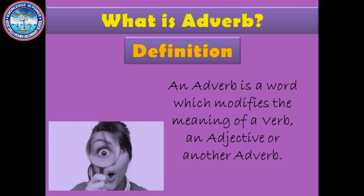Adverb is the most important part of speech in English grammar. An adverb is a word which modifies the meaning of a verb, an adjective, or another adverb. You hear these words on a daily basis, like happily, slowly, sharply, unfortunately, always, very, and so on.